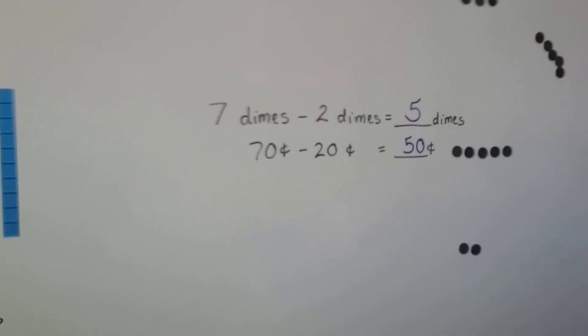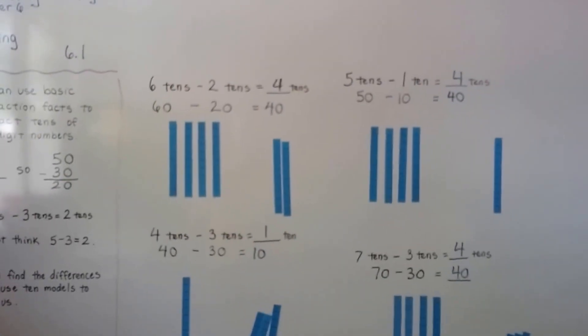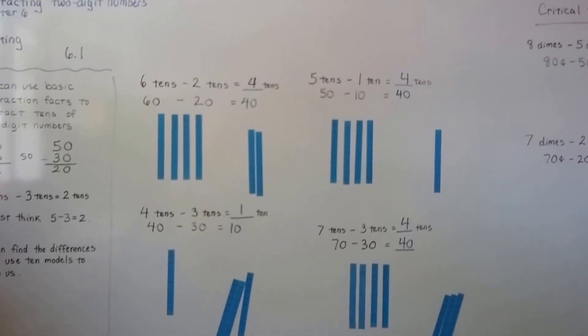So just remember, dimes are ten. So that's subtracting tens. It's very easy. We just think of subtracting ones, and it's got a zero at the end.